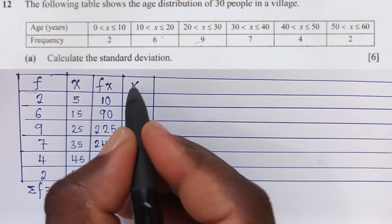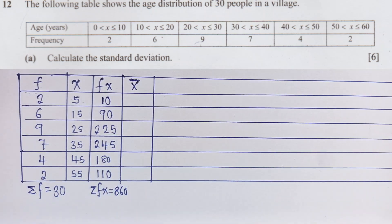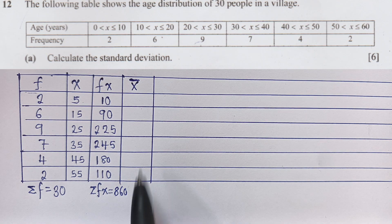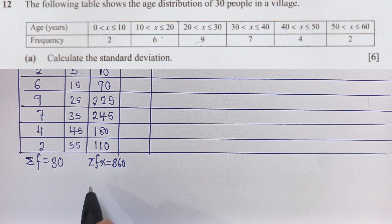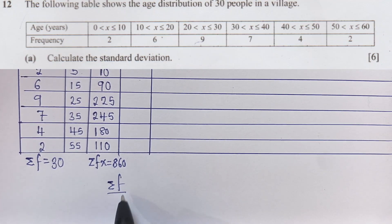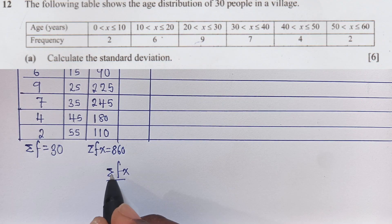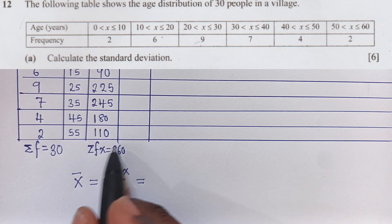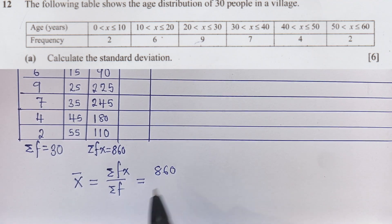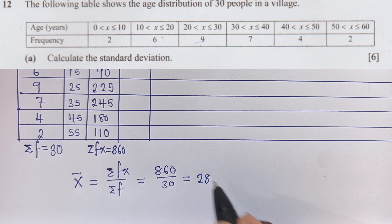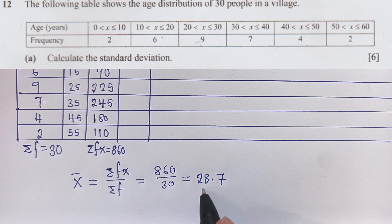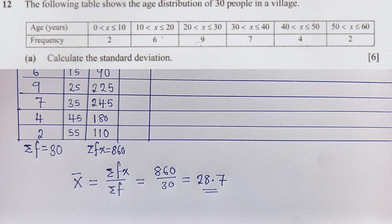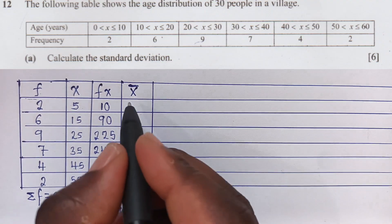The next column is x̄ (the mean). To find the mean, you use: x̄ = Σfx ÷ Σf = 850 ÷ 30, which gives us 28.7 (in three significant figures; the full value is 28.66667). You write this mean value — 28.7 — repeatedly down the entire x̄ column for each row.